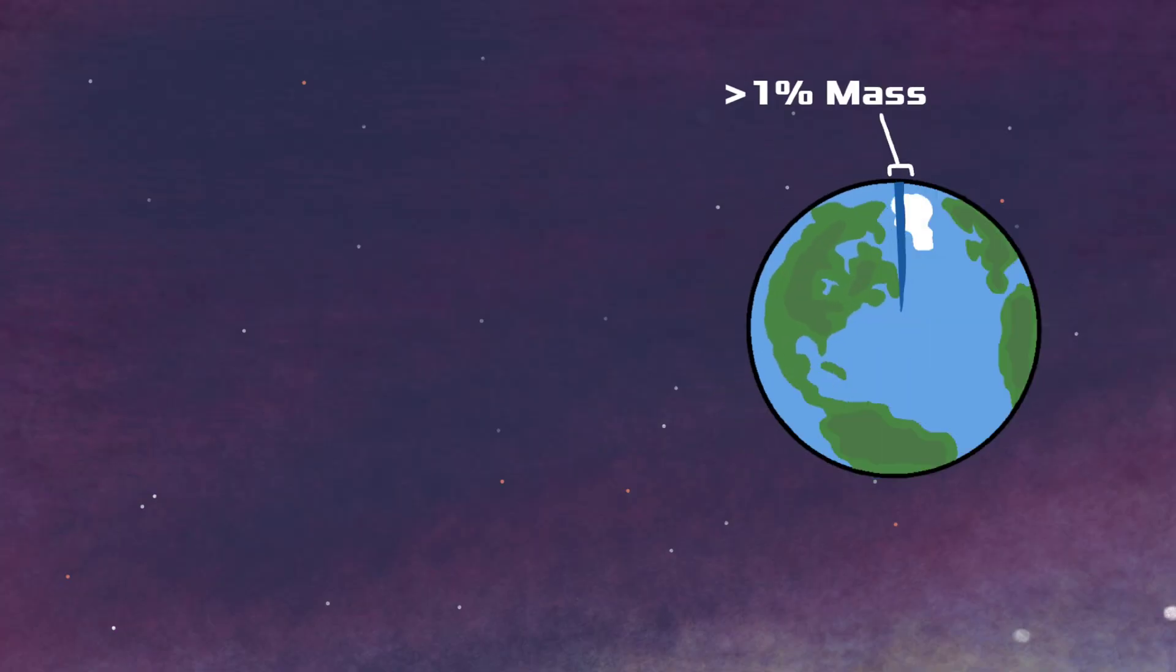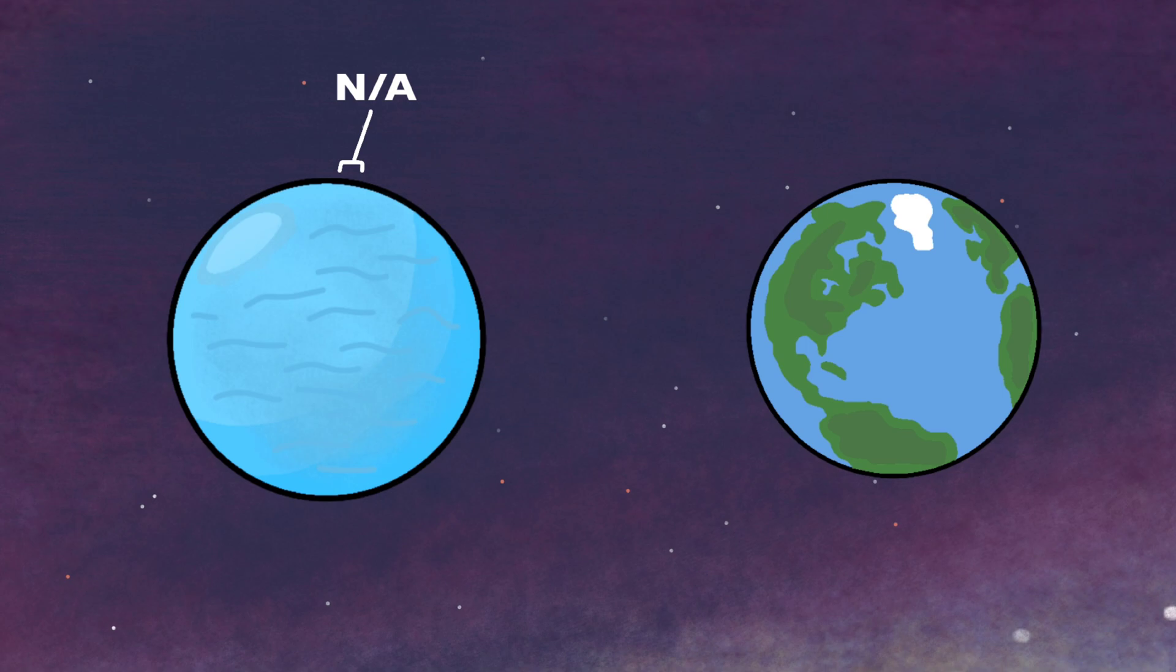As you probably know, Earth is covered in 70% water, but it only accounts for less than 1% of its mass. On this planet though, we're actually unsure, but based on the fact that it has a lot of water probably, it could have oceans tens of hundreds of kilometers deep.